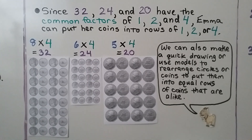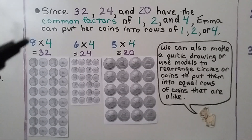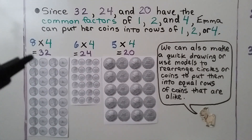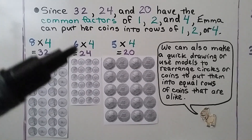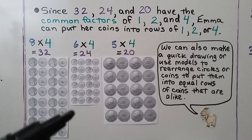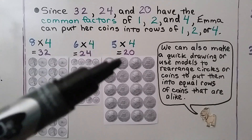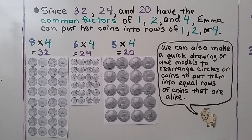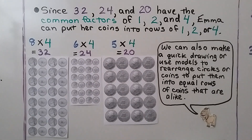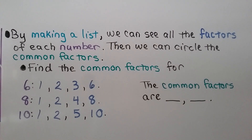Since 32, 24, and 20 share the common factors 1, 2, and 4, Emma can put her coins into rows of 1, 2, or 4. If she uses rows of 4: 8×4=32 rows of nickels, 6×4=24 rows of dimes, and 5×4=20 rows of quarters. By making a list we can see all the factors of each number, then circle the common ones.